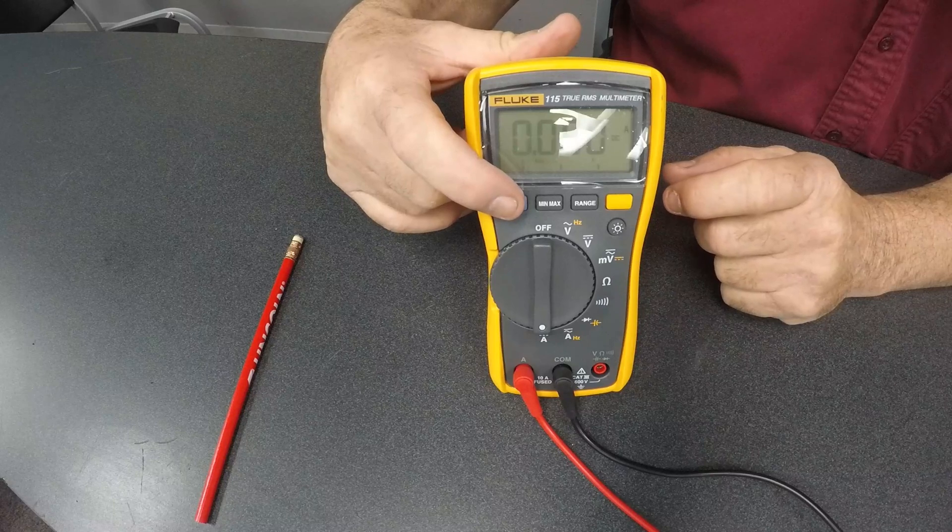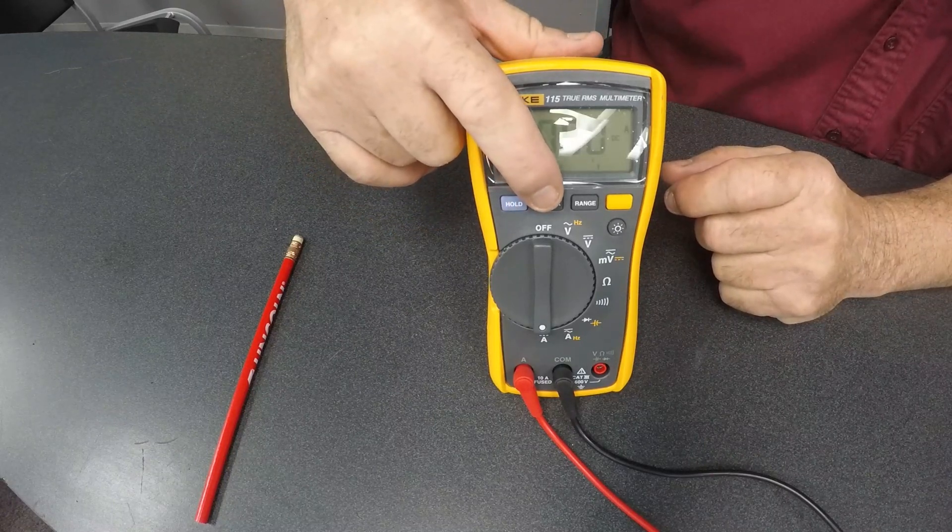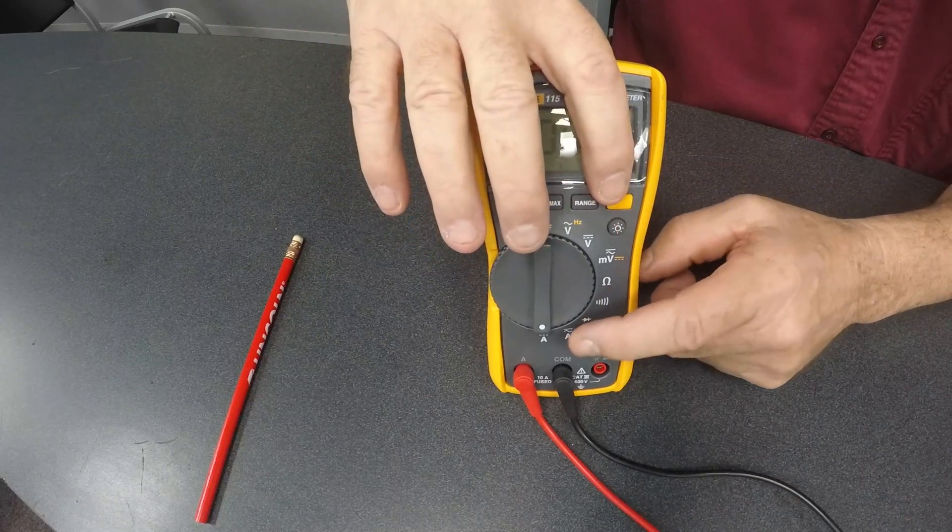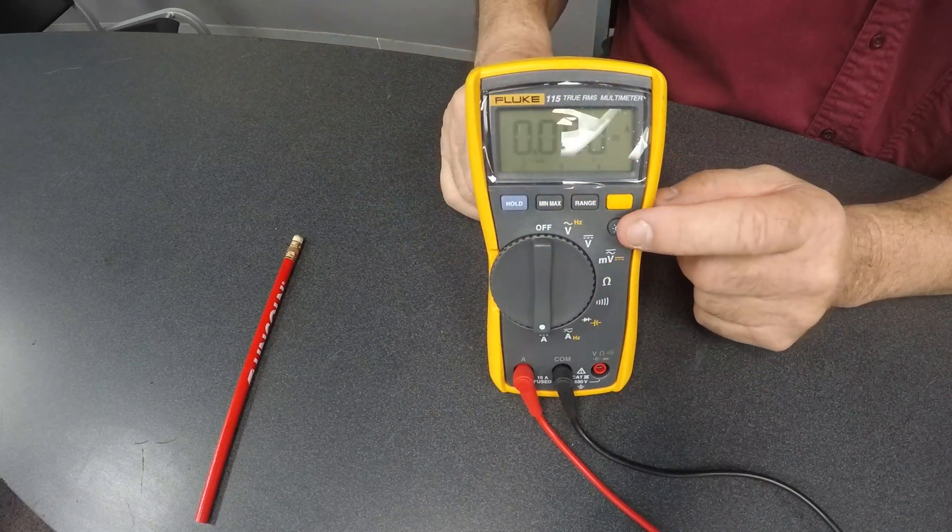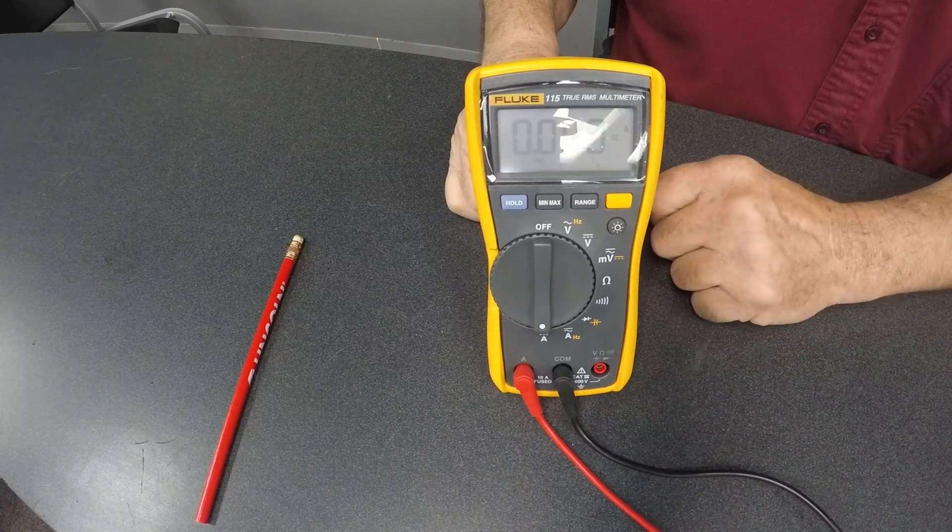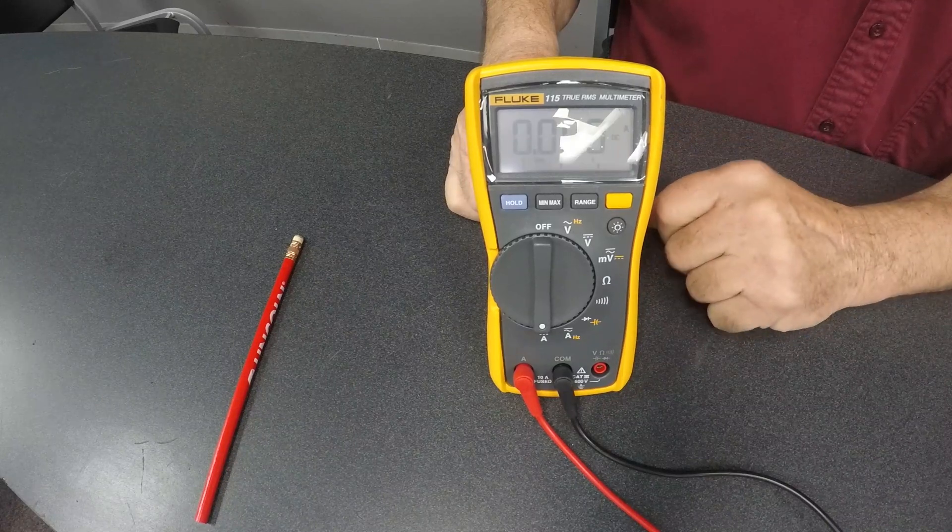Up here on the top of the display, we have a hold button, we have a min-max, we have a range, we have the yellow button, which turns all this into more of the multimeter, and then of course, we have here, we have the light, in case you're in a dark area and you can't see the digital display.